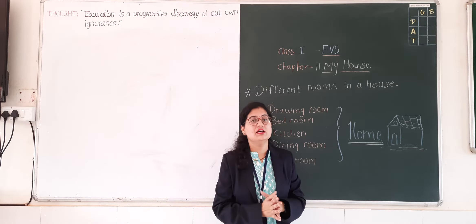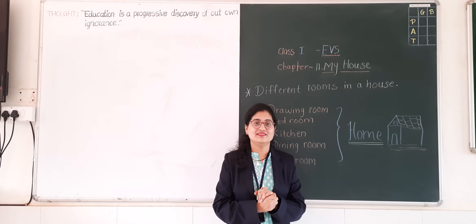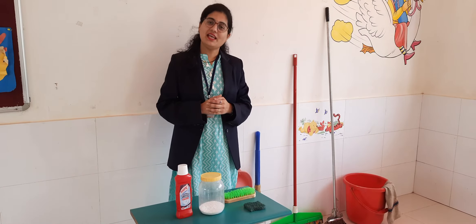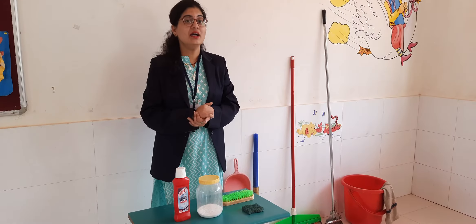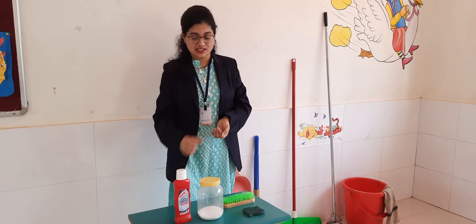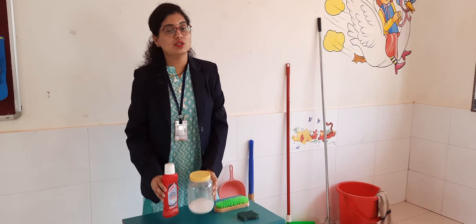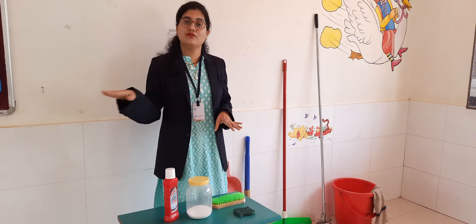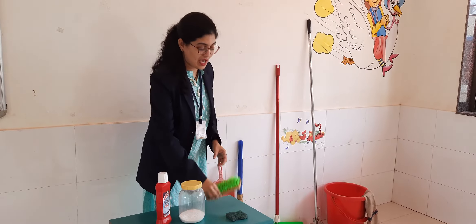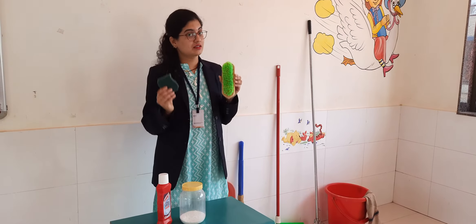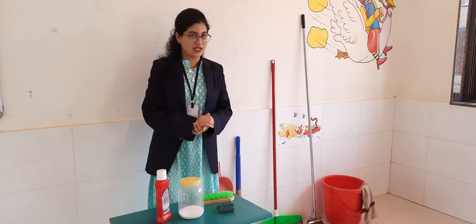Now we will see the materials which help us to keep our home clean and tidy. We have different objects for this purpose, such as bathroom cleaner and detergent — we can use them to wipe the floor as well as to clean bathrooms and toilets. We have a brush and scrubber to wash our home tiles.